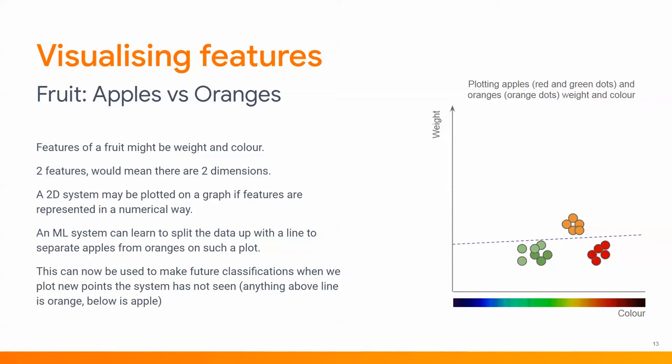We can draw a line to separate the apples and oranges, and in a way this is a very naive form of machine learning if we can get a computer to figure out the equation of that line. If we classify a new piece of fruit by plotting its weight and color, and it falls above the line, we can say with some confidence it's an orange; if below, it's probably an apple. Machine learning is essentially just trying to figure out the best way to separate data so it can classify later.